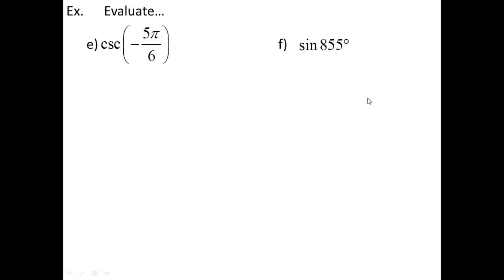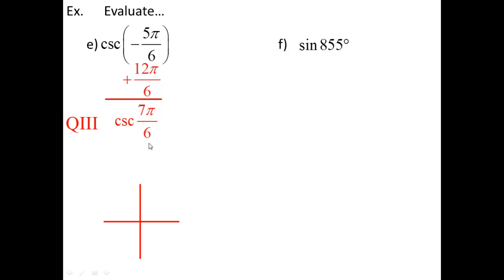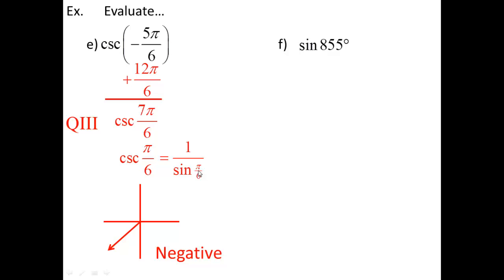Now cosecant of −5π/6. To evaluate cosecant, evaluate sine and flip it. −5π/6 is too small, so add 2π (which is 12π/6) to get 7π/6. That's in the third quadrant. Cosecant behaves like sine in Q3, so it's negative. The reference angle for 7π/6 is π/6. Sine of π/6 is 1/2. Cosecant is 1 over 1/2, which equals 2. Since we're in Q3, the answer is negative: cosecant of −5π/6 = −2.